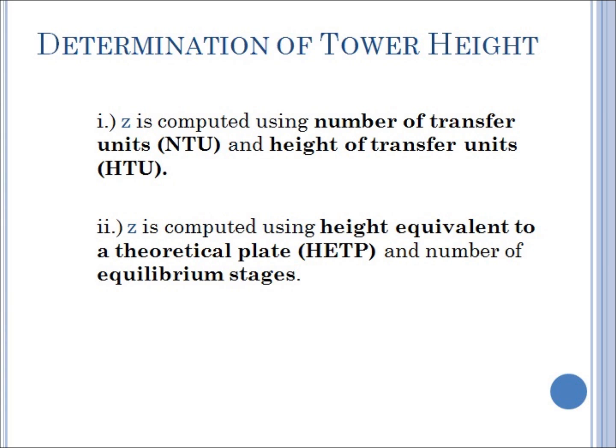Let's now go to the main event. The determination of tower height, or Z, can be determined in two ways. First, Z is computed using number of transfer units, or NTU, and height of transfer units, HTU. Next, Z is computed using height equivalent to a theoretical plate, HTP, and the number of equilibrium stages, or N.